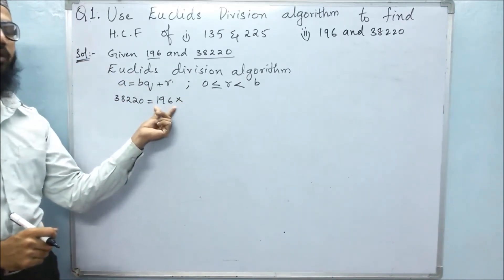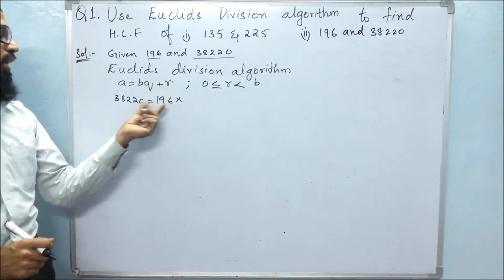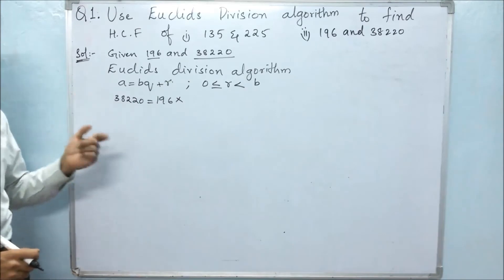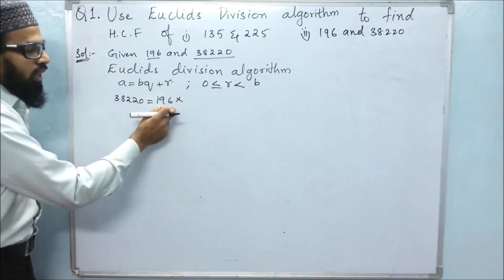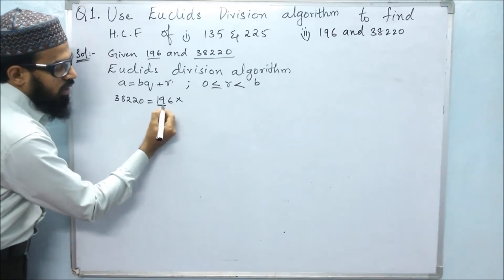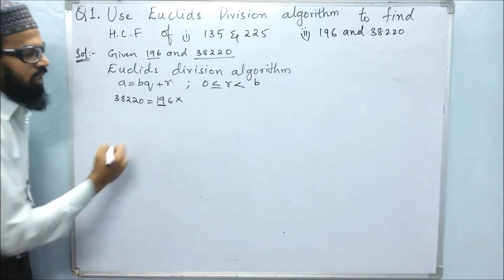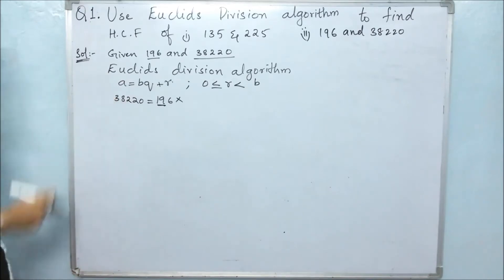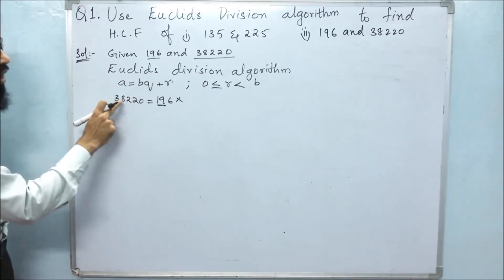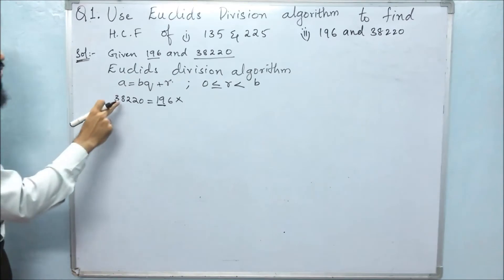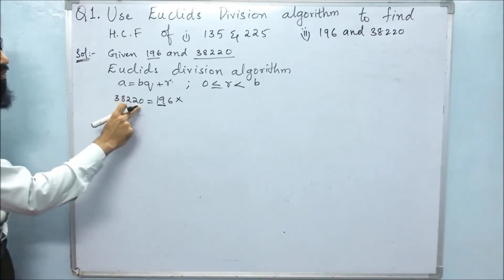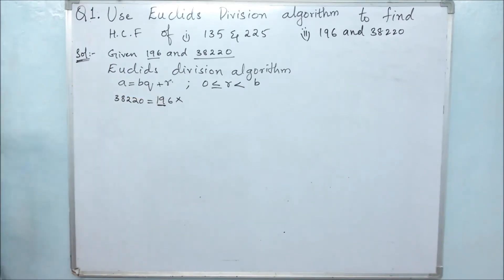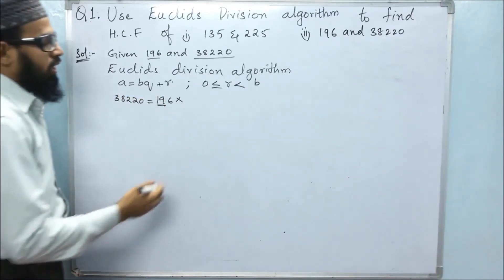In the 196 table, we need to find the nearest number to 38,220. Concentrating on the first two digits, 19, we see that 19 times 2 gives 38. But we have a five-digit number, so we need to multiply 196 by another three-digit number. If we multiply 196 by 200, we get 39,200, which is more than 38,220.